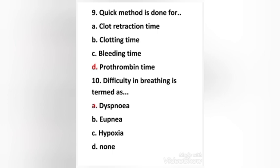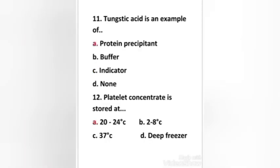Difficulty in breathing is termed as — dyspnea, hypnea, hypoxia, or none? The right answer is option A — difficulty in breathing is termed as dyspnea. Next question: tungstic acid is an example of — protein precipitant, buffer, indicator, or none? The right answer is option A, protein precipitant.